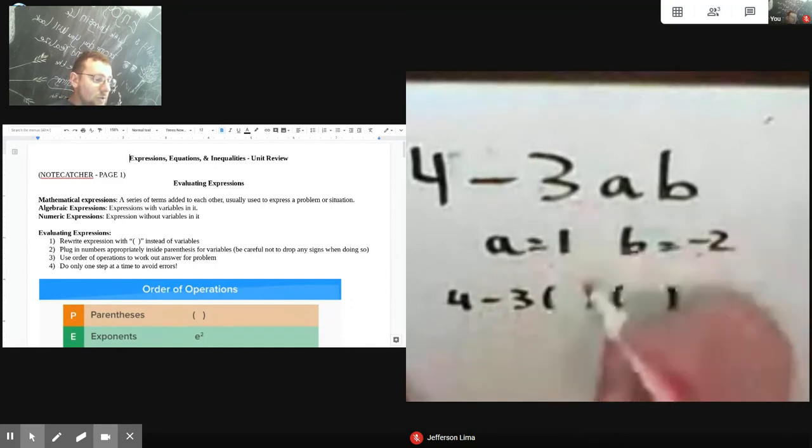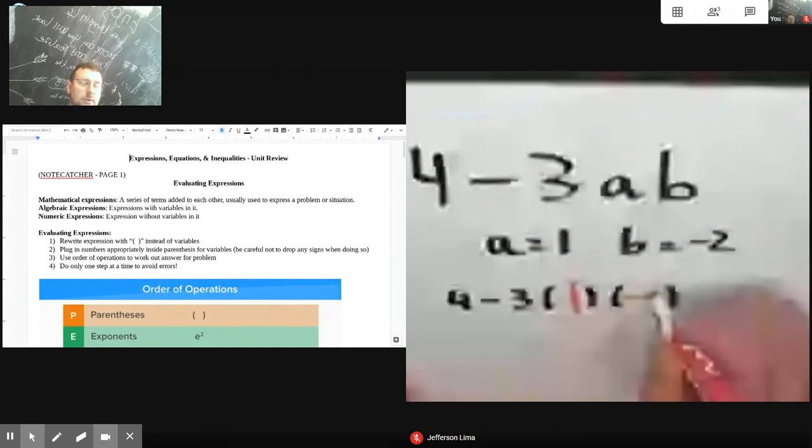So the A goes in the first space, and it's one. And then the B that goes in the second blank is negative two, right?